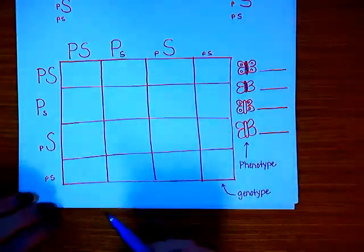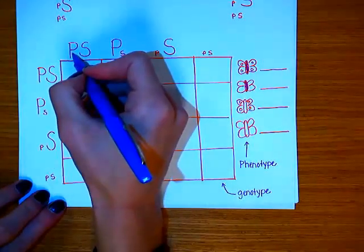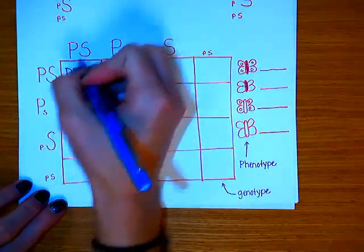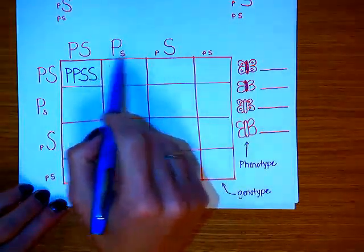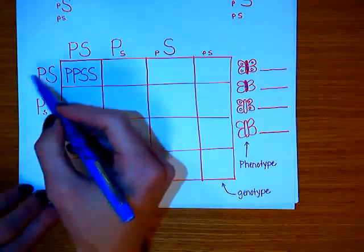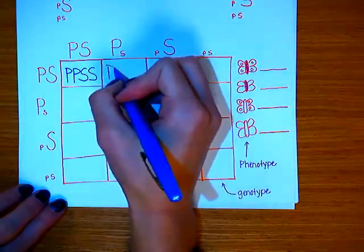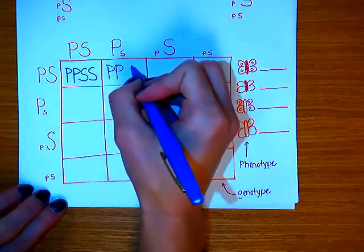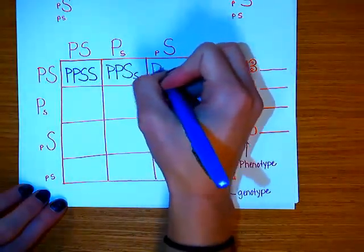We write the possible gametes along the top and side of the Punnett square and cross them just like a regular Punnett square. So we take what we have along the top and cross it with what we have along the side — for example, big P big S crossed with big P big S, and then big P big S crossed with big P little s — and we go ahead and do that all the way through.